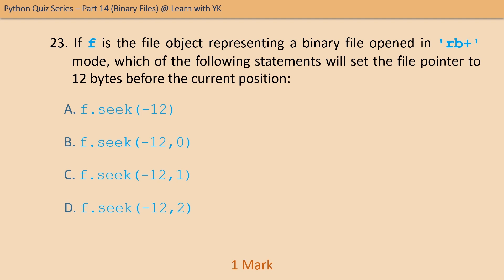Question number twenty-three: if f is a file object representing a binary file opened in rb plus mode, which of the following statements will set the file pointer to 12 bytes before the current position? The correct answer is option C.